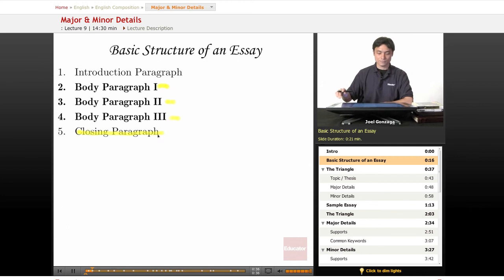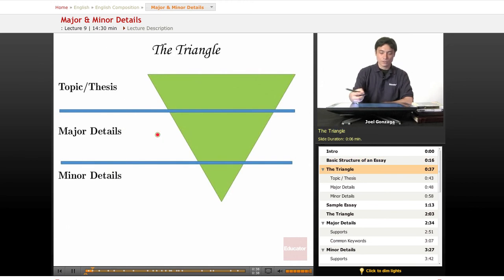So, let's continue. We got a triangle here. The triangle represents what's most broad and what's most narrow. Your topic and thesis is the most general thing that you can come up with.